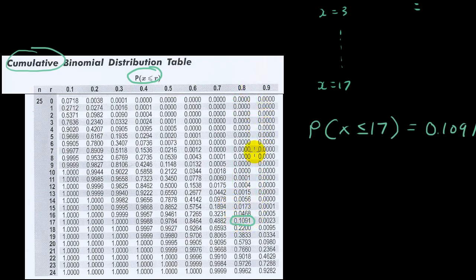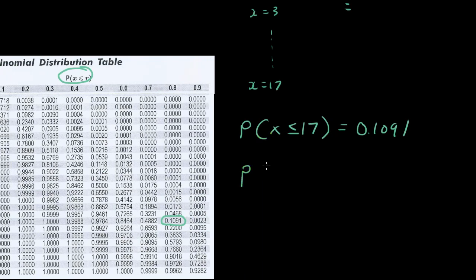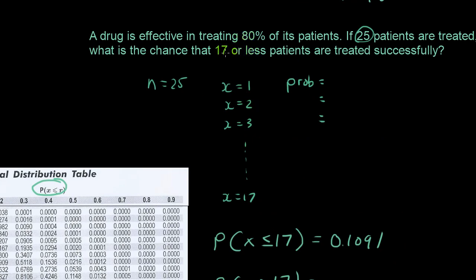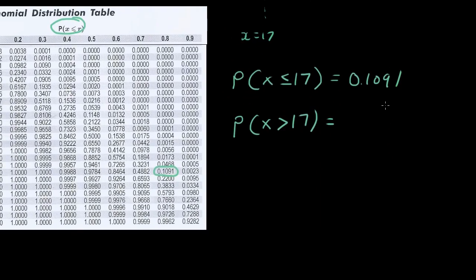Okay, what if I want probability of x being bigger than 17? So let's say I rephrase the question: what is the chance that more than 17 patients are treated successfully? Then what you do is you simply go one, which is the probability of the whole situation, minus 0.1091. And then that will tell you the probability of getting more than 17 patients, and the answer is 0.8909.